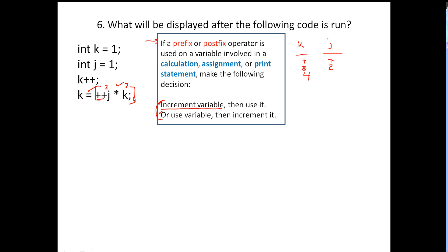Next we have J++, a postfix operator. However, there's no calculation, no assignment, and no print statement, so we just increment and that's all. J becomes 3.